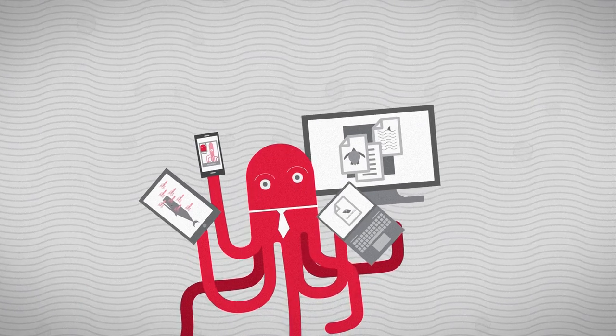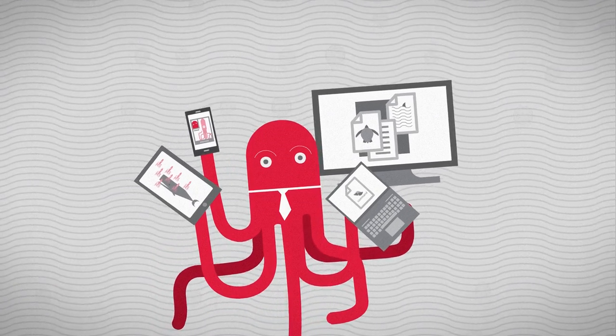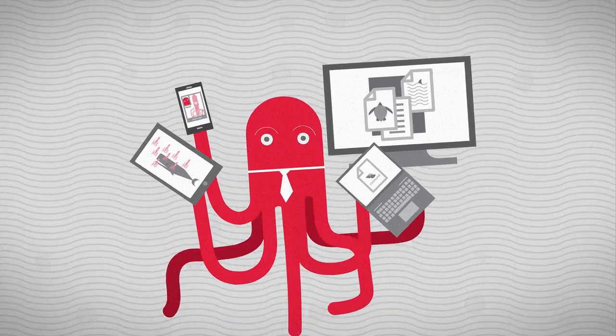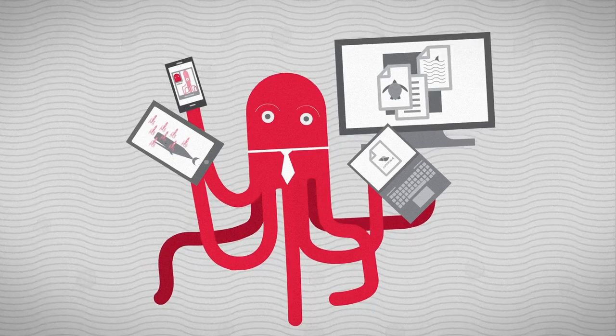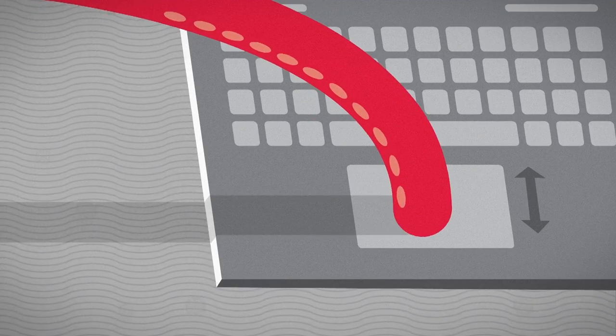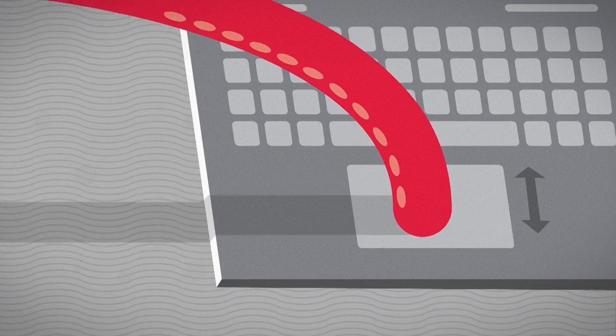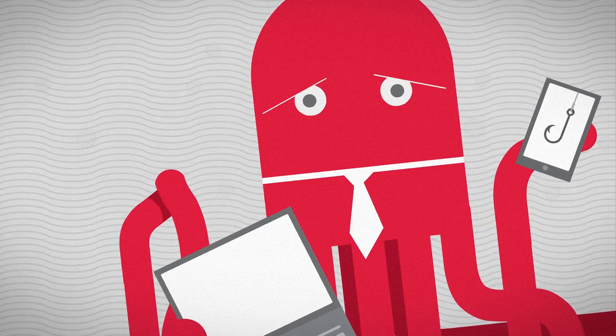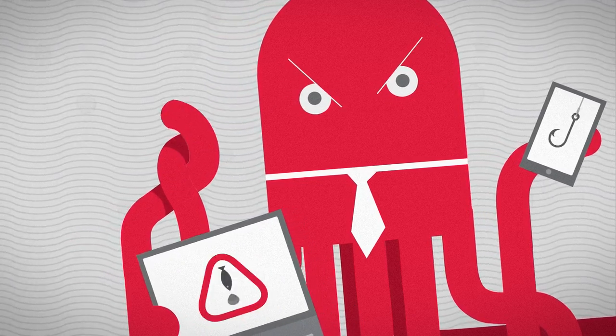Oscar is attached to his devices. He can't live without them. But whenever he needs an important file, it's never where he thought it was. He drags and drops until he gets all tangled up.